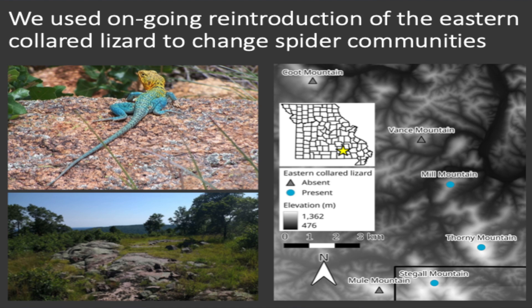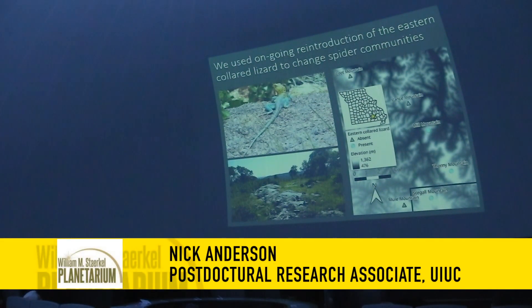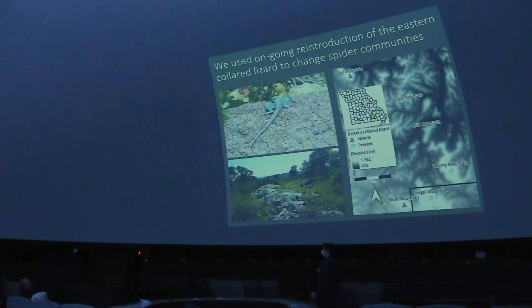Specifically we were working at six mountains in the southeast part of the state, with multiple study sites per mountain. Three of these mountains have an ongoing restoration effort for the eastern collared lizard — this is a male here, these bright blue and yellow lizards that are quite awesome, super fast, and really fun to watch. Previous work has shown that they eat a lot of spiders and other insects, but not so much bees.